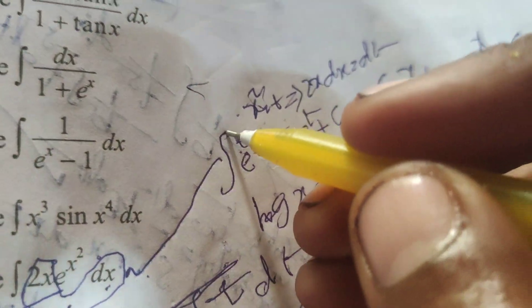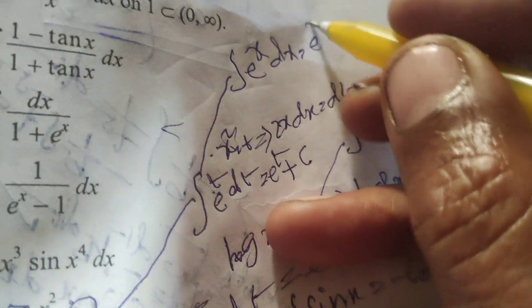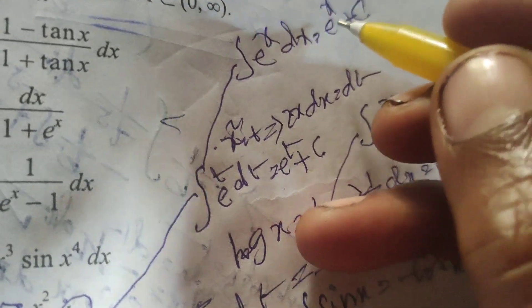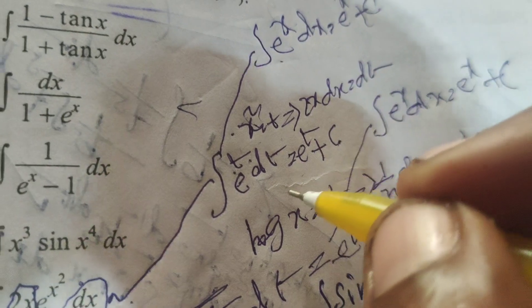According to this formula, integral of e^x dx equals e^x plus c. Using this formula, but in place of x, t is there, so e^t plus c.